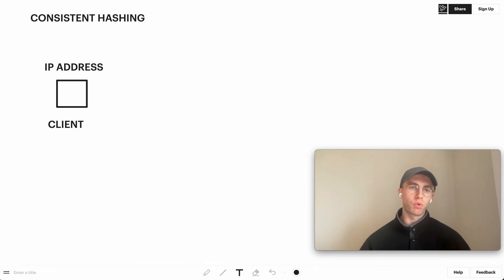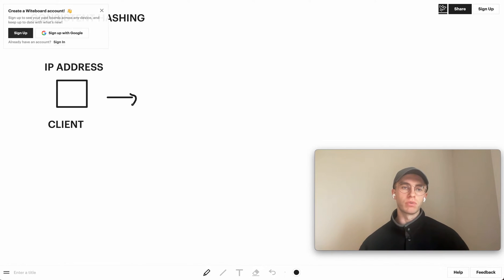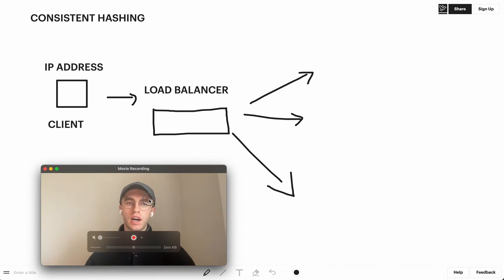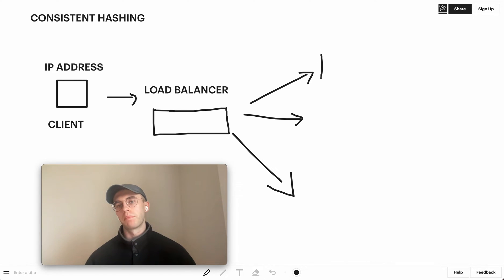When it makes a request to a particular server, generally what you would have, especially at scale, is something like a load balancer that sits in the middle here. Essentially what this does is it routes these requests to varying backend servers here. We do this so that we can horizontally scale our applications.